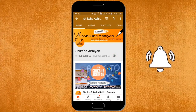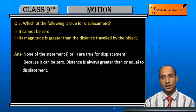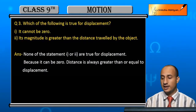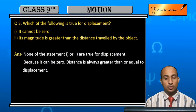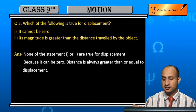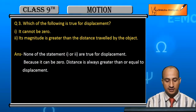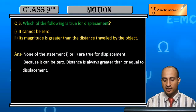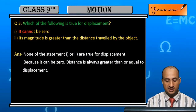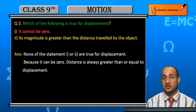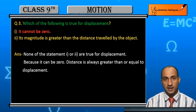Now see Question 3. Question 3 asks: which of the following is true for displacement? The first option is: displacement cannot be zero — that is, displacement kabhi bhi zero nahi ho sakta. Is this true? Let's see.